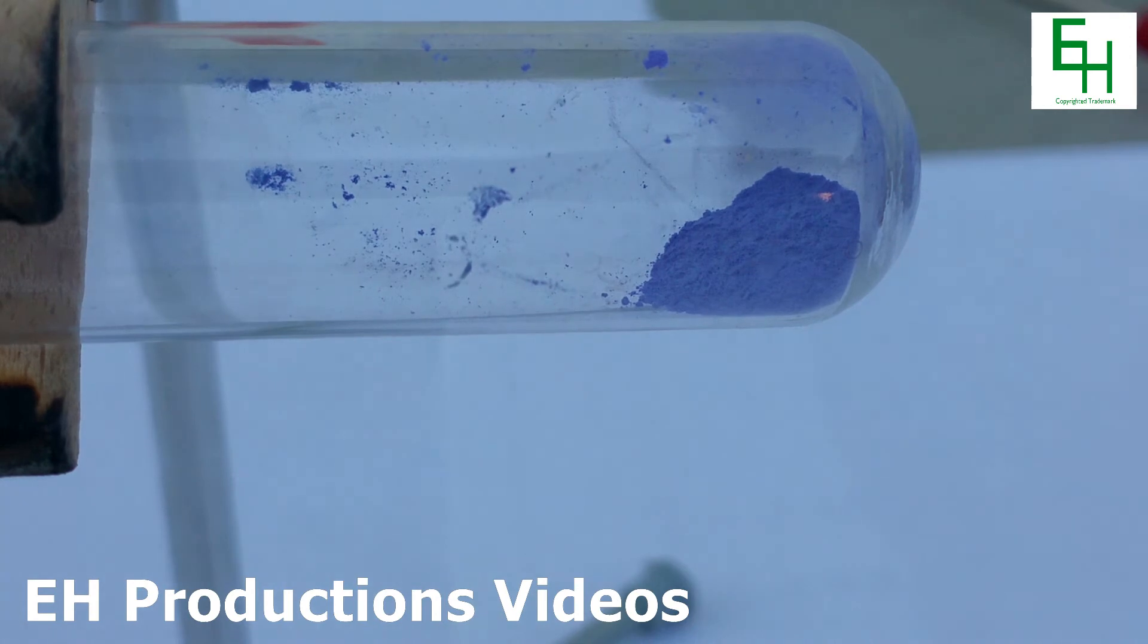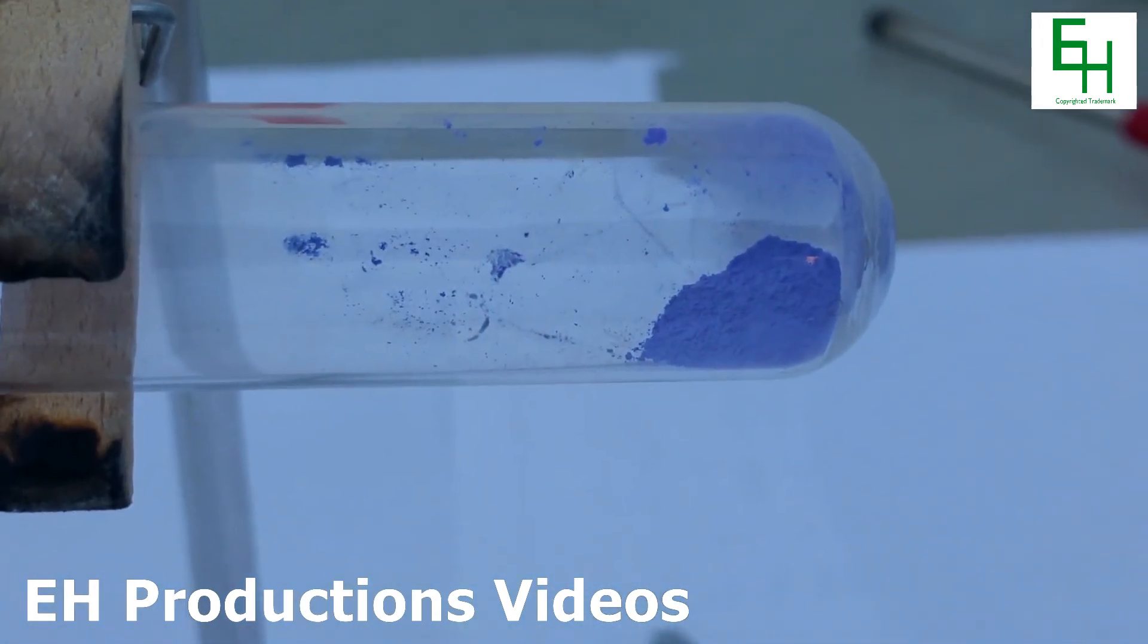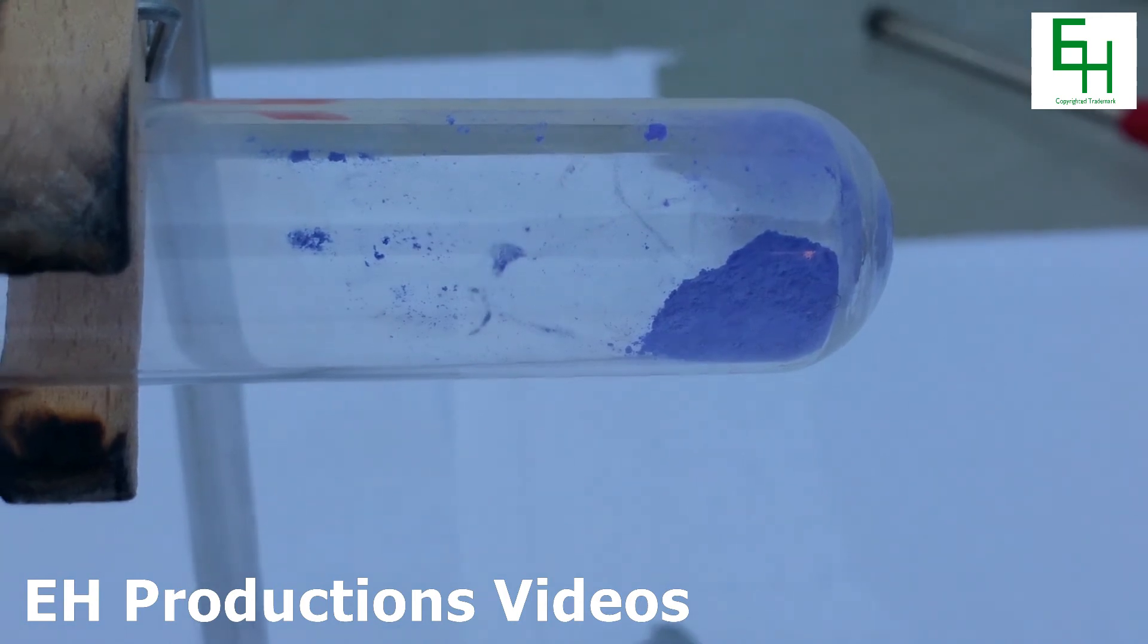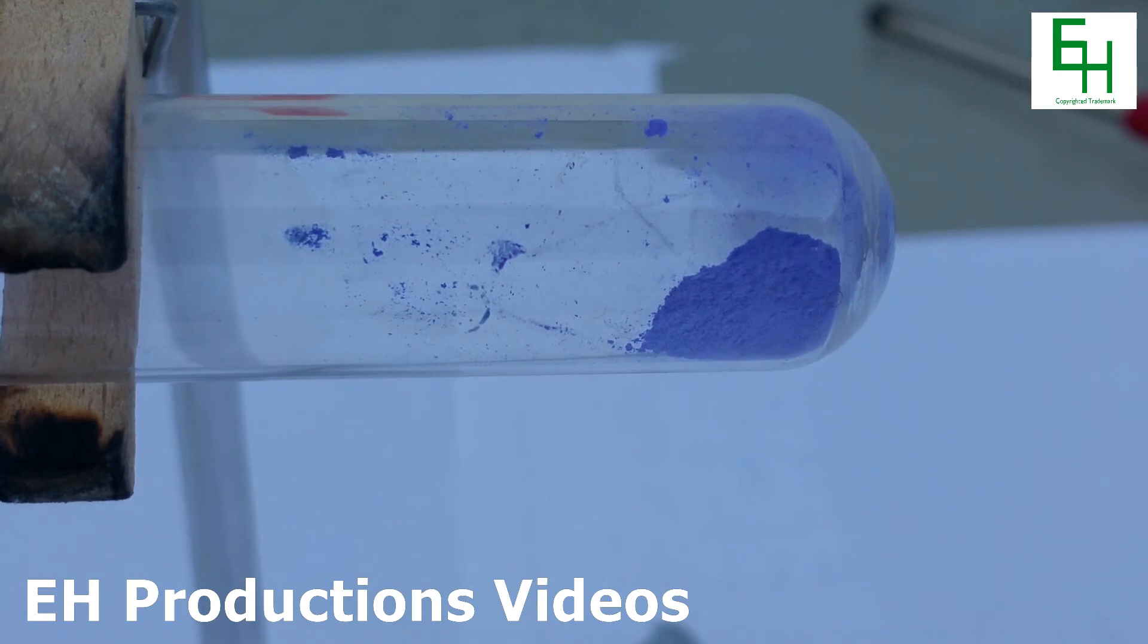It is now a deep purple color instead of the original blue copper sulfate color. It is quite peculiar, actually. Anyways, there you go. So that is how you make some tetraamine copper sulfate.